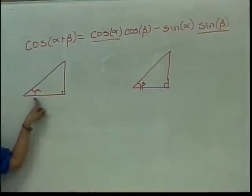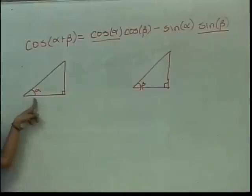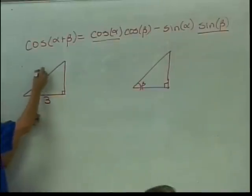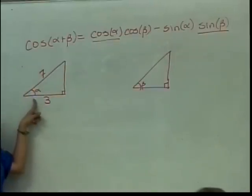Now, for the alpha triangle, I am told that the cosine of alpha is 3 over 7. What does that mean in terms of the sides of the triangle? My adjacent side is 3. My hypotenuse is 7. Everybody okay with that?